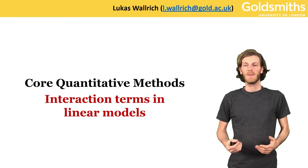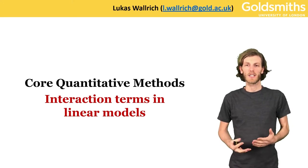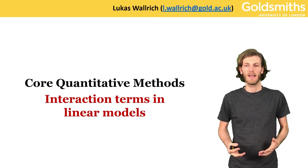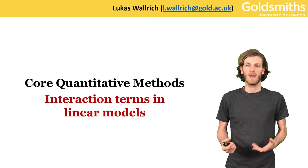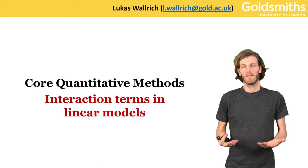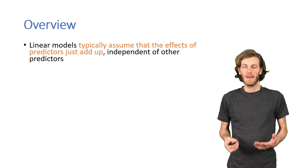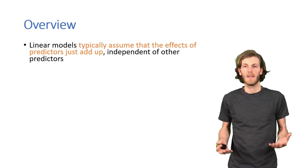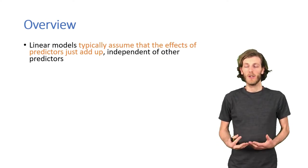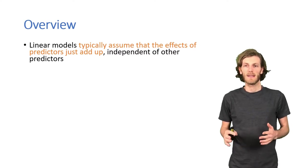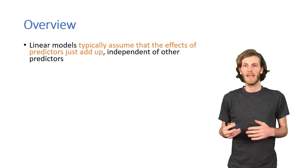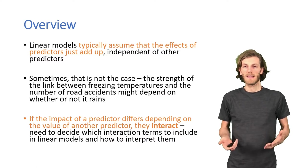Welcome back. In this video I'm going to talk about interaction terms in linear models. They're the last building block in making our linear regression models complete. So, what are they about? Typically, when we put multiple predictors into a model, we assume that the effects just add up. The effects are independent of the value any other predictor has. Clearly, sometimes that's not true.